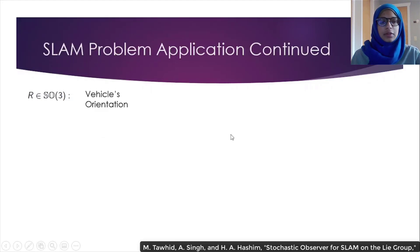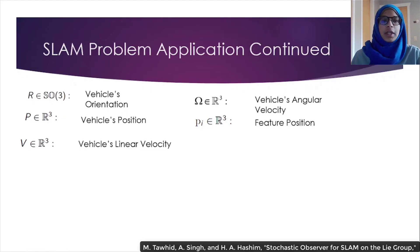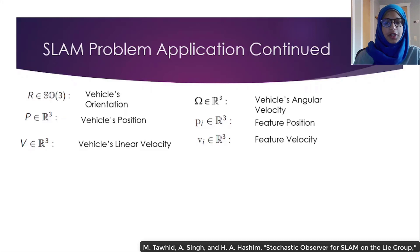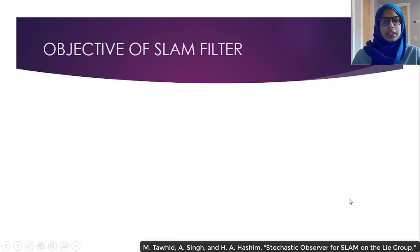Where r is equal to the vehicle's orientation, p is equal to the vehicle's position, v is equal to the vehicle's linear velocity, omega is equal to the vehicle's angular velocity, pi is equal to the vehicle's feature position for 1, 2, 3, all the way to n features, and vi is equal to the velocity of the features defined with respect to the body frame. We have r dot equal to r multiplied by the skew symmetric of omega, p dot equal to the vehicle's orientation multiplied by v, and small p dot i equal to r multiplied by vi for i equal to 1, 2, all the way to n features. In our application, since we're considering static features, the velocity of the feature is always equal to 0.